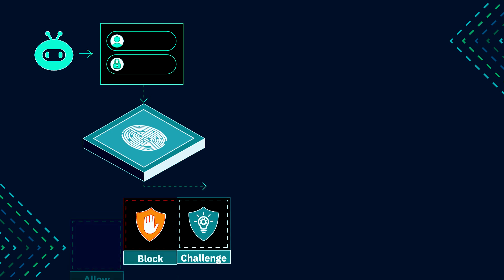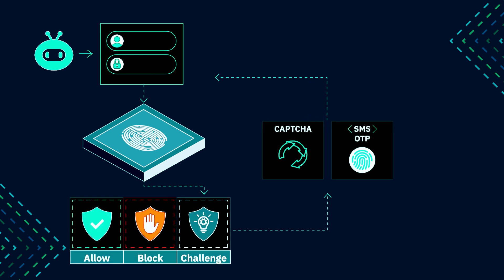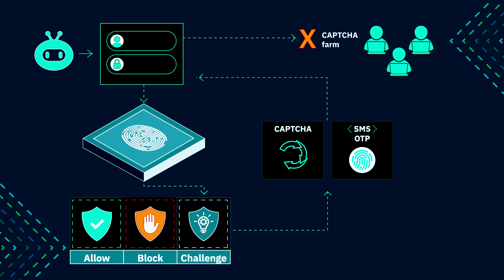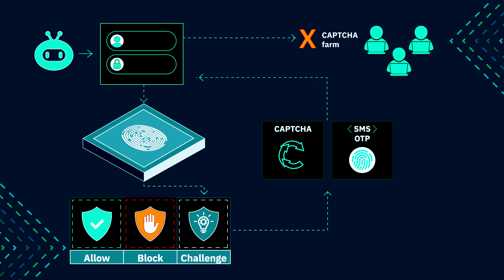In other cases, a challenge verdict may be returned where Stitch has identified some risk but not enough to recommend a full block. How you react will depend on you and your risk tolerance. For example, you can require a step-up authentication method with Stitch, like SMS OTPs, or Stitch offers a strong version of CAPTCHA that is invisible to the user and leverages fingerprinting to verify that the device served the CAPTCHA is the same device that completes it.